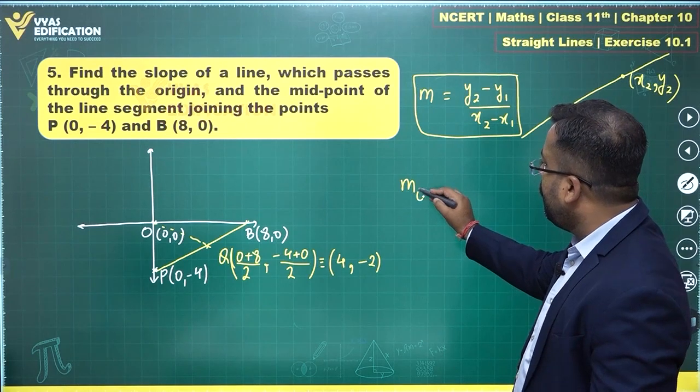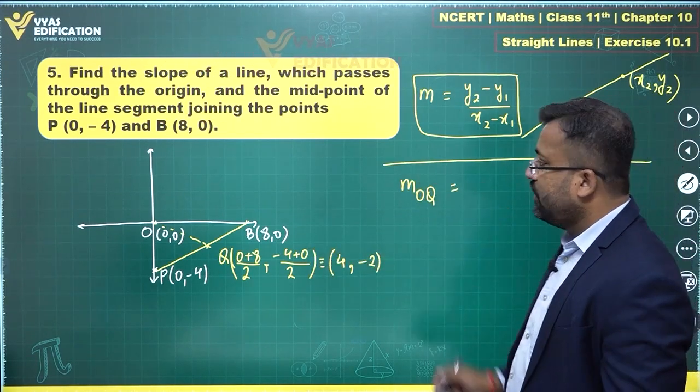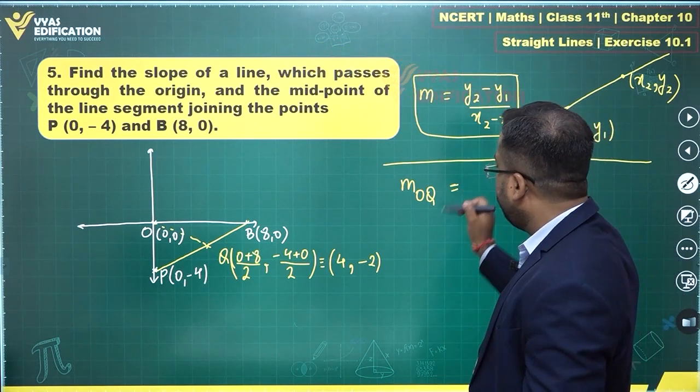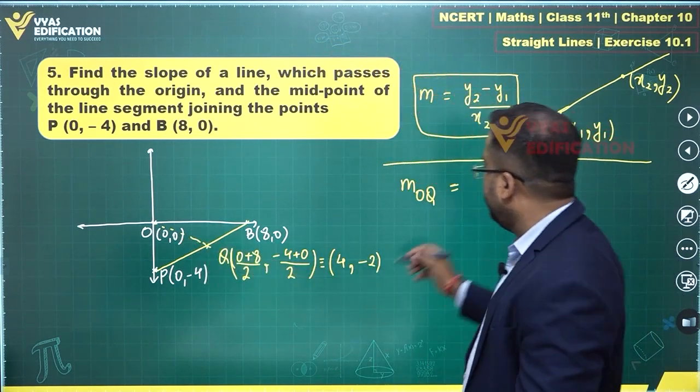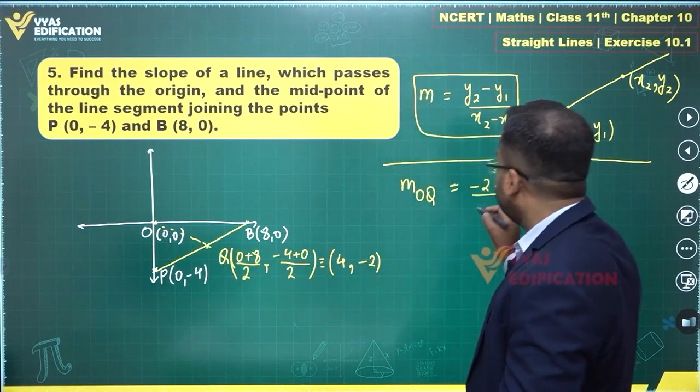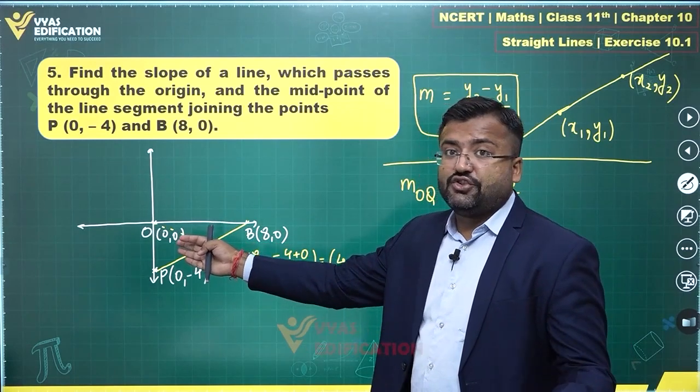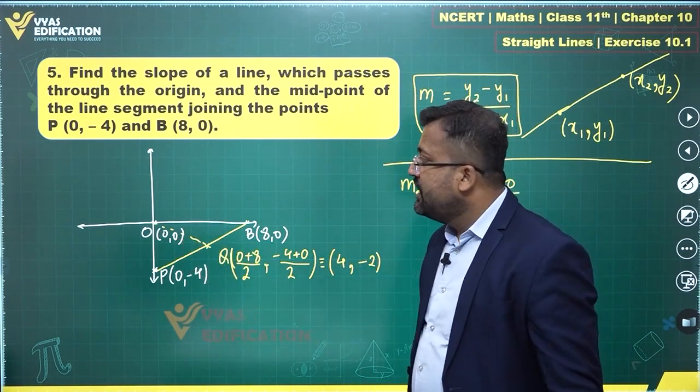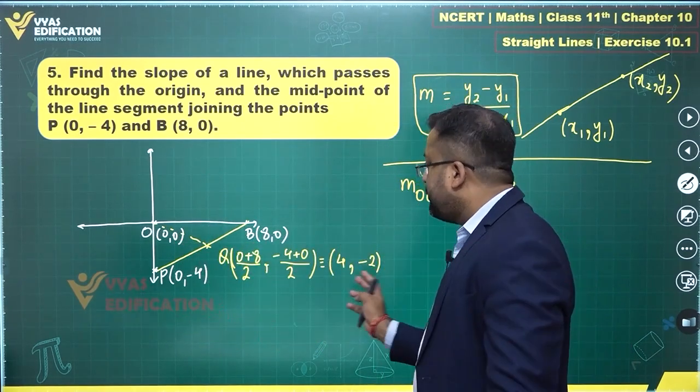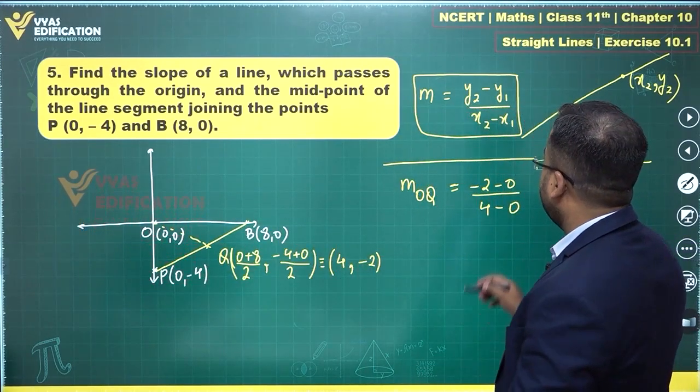So slope of OQ will be equal to what? For OQ you will have Y2 minus Y1 which is minus two minus zero, and X2 minus X1 which is four minus zero. You could have taken X2, Y2 as this as well, so in that case zero minus minus two and zero minus four. That will give you the same result.